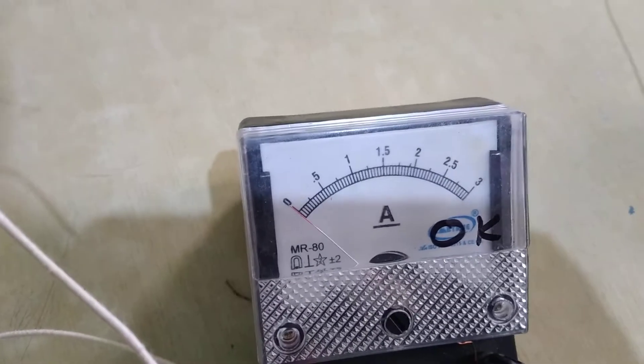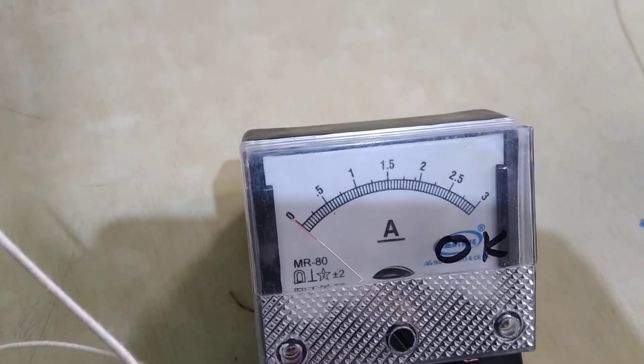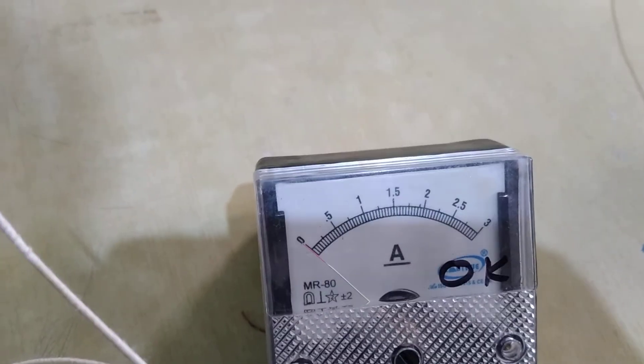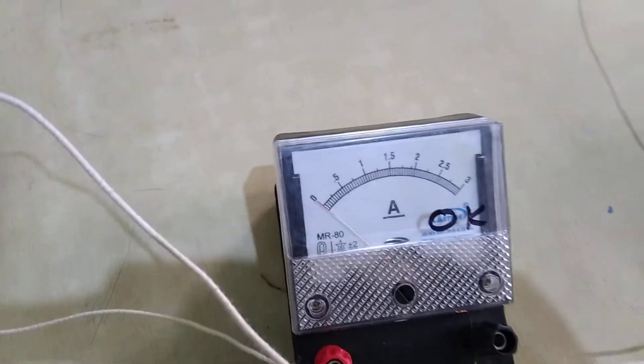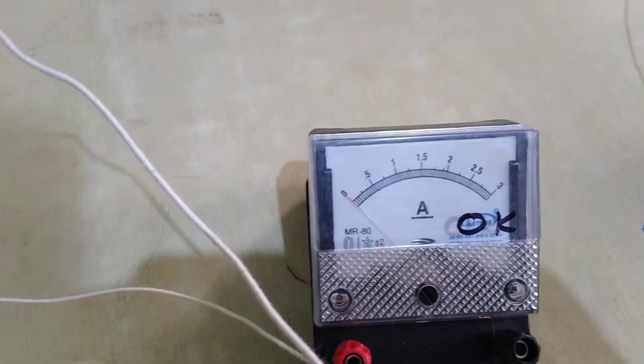You can see we can measure the current up to 3 ampere. So 3 divided by the total number of divisions which is 60, so 3 by 60 that will give 0.05 ampere.